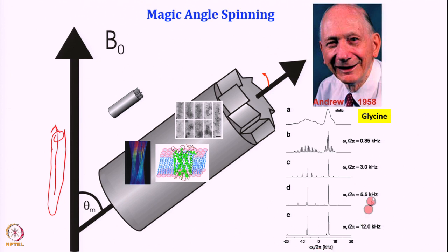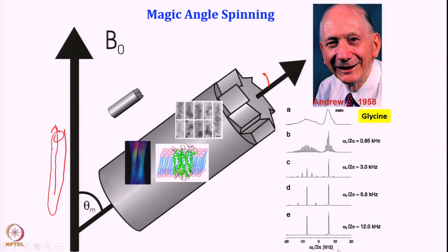Because of this spinning we are now going to get really sharp lines. We have to spin the rotor very fast, and this spinning is called magic angle spinning. We are spinning our rotors at an angle called the magic angle, and this averages out our anisotropic interactions.